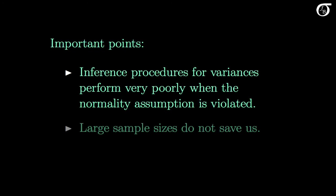Two important points from the simulations: Inference procedures for variances perform very poorly when the normality assumption is violated. How poorly depends largely on the kurtosis of the distribution — how sharp the peak is and how heavy the tails are. The coverage probabilities can be much less than the stated confidence level, and reported results can be very misleading. Unlike inference procedures for means, where violations of normality become less problematic as sample size increases, in inference procedures for variances large sample sizes do not save us. In fact, the coverage probabilities get worse for large sample sizes — they get farther from the stated value.